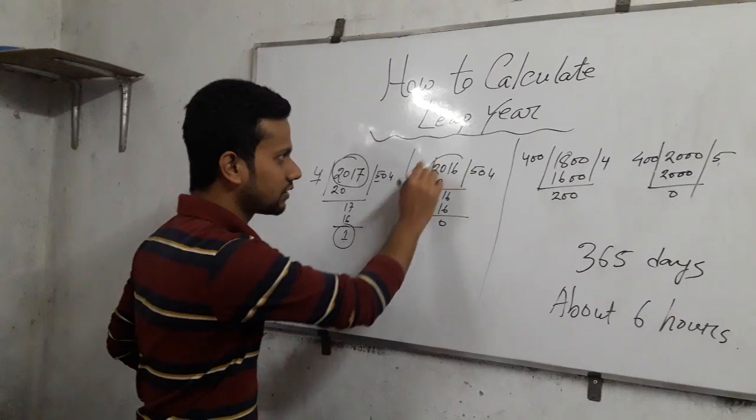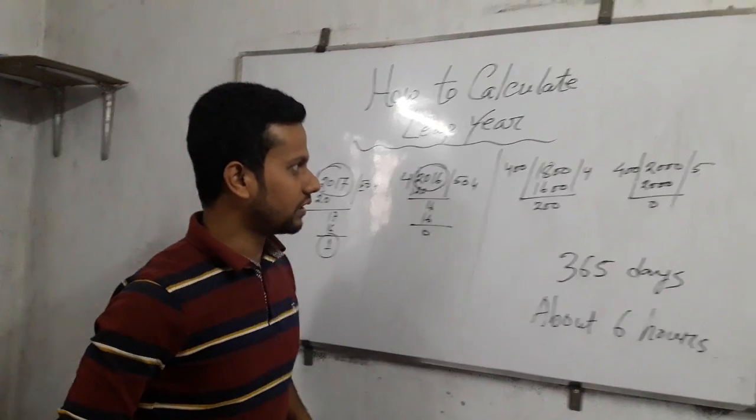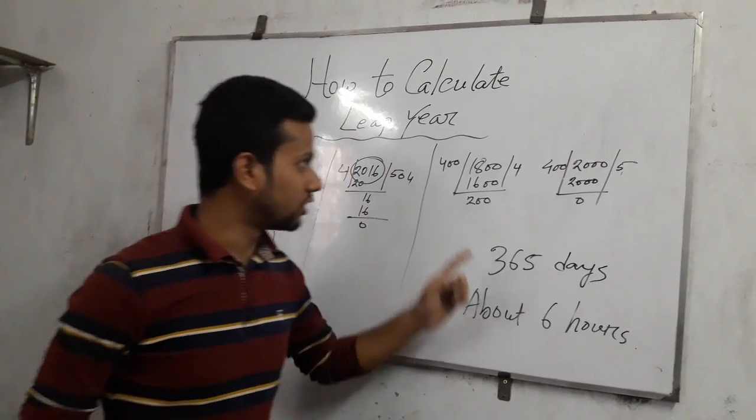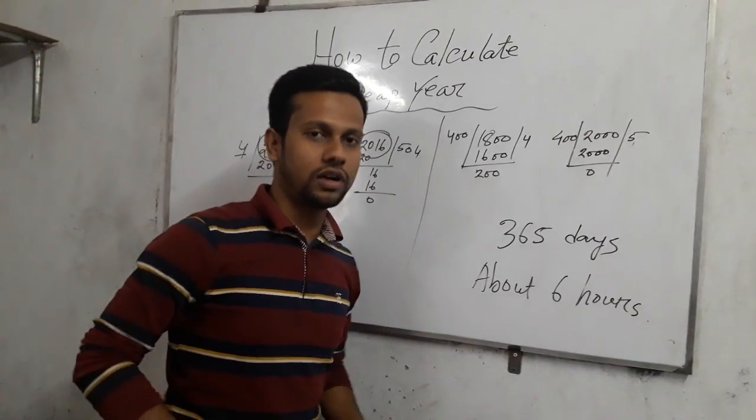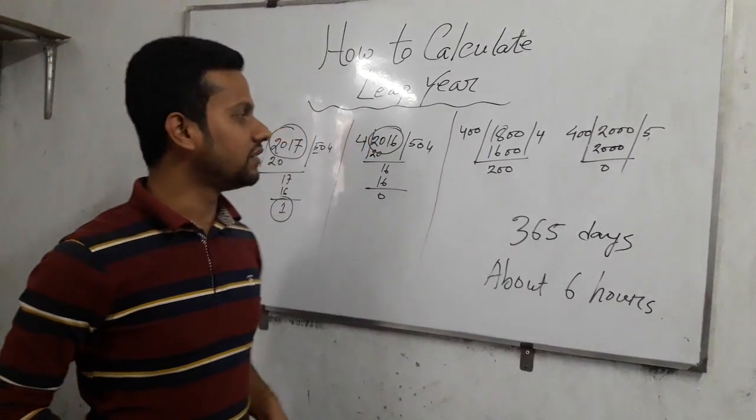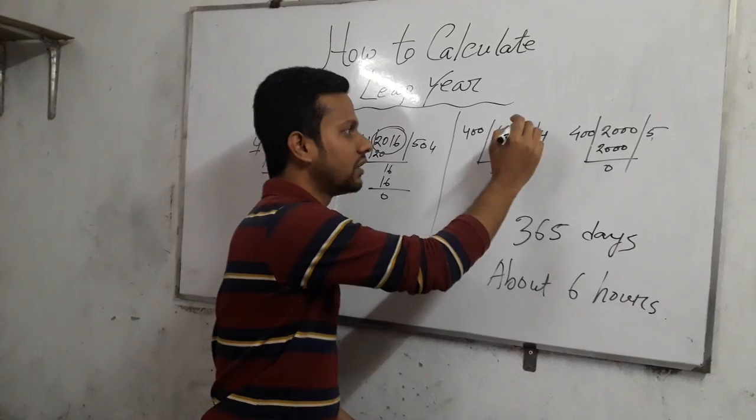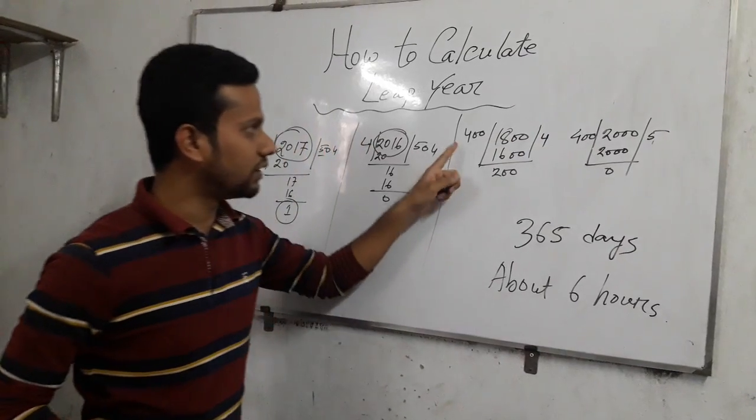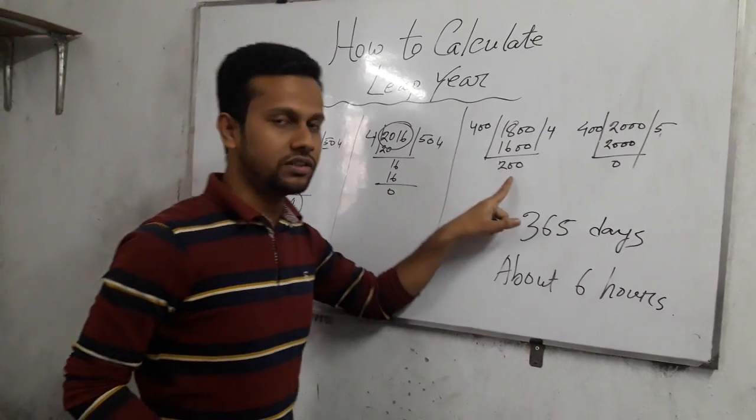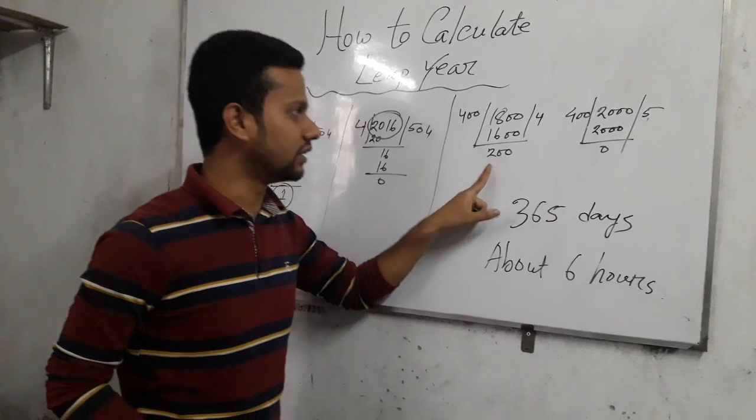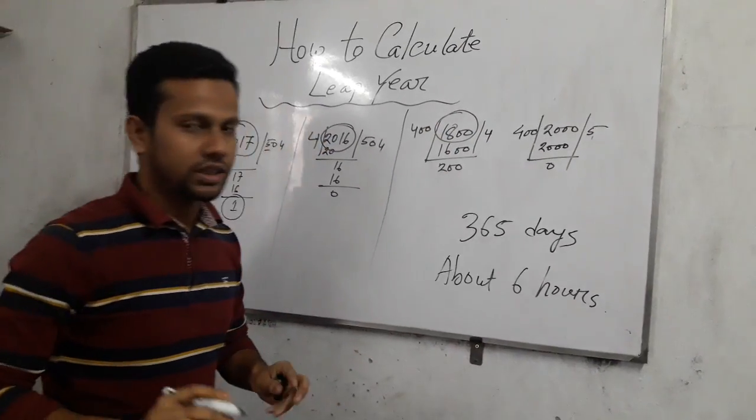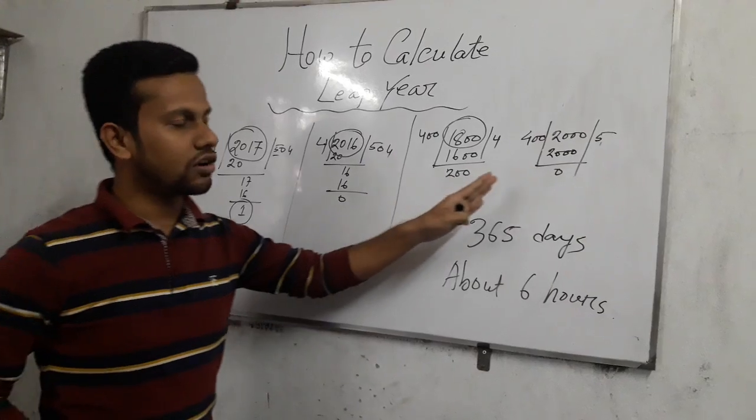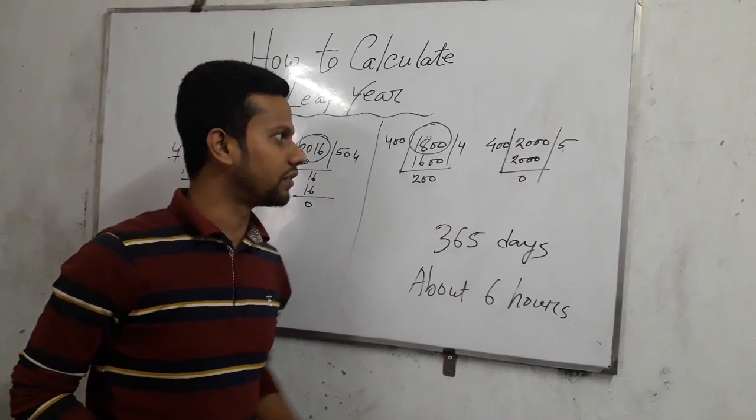And if any year has two zeros at last, we have to divide it by 400. Now let's see, 1800 year, divided by 400. If there's a remainder, the remainder is 200, so it is not a leap year. If no remainder at last, then it is called a leap year.